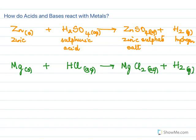So in general, we can now say when a metal reacts with an acid, we get salt plus hydrogen gas. This is a salt, and we get hydrogen gas.